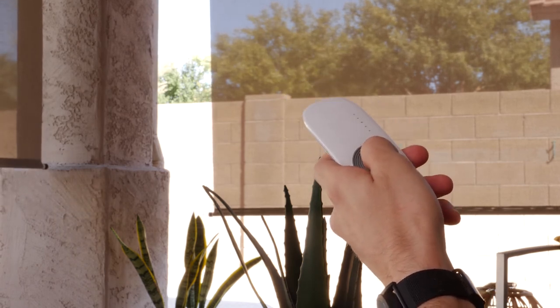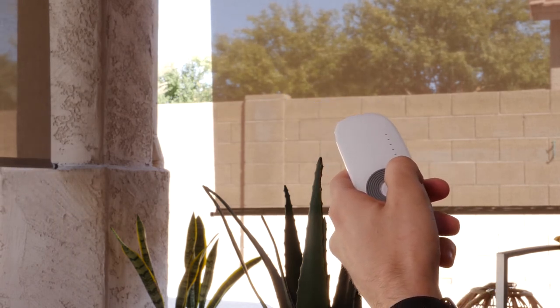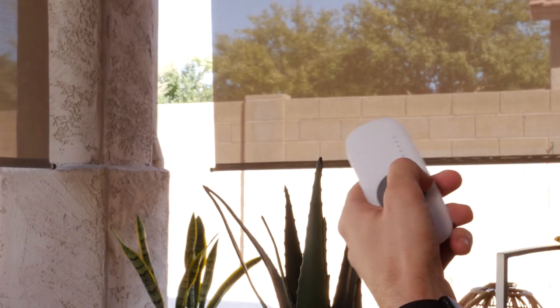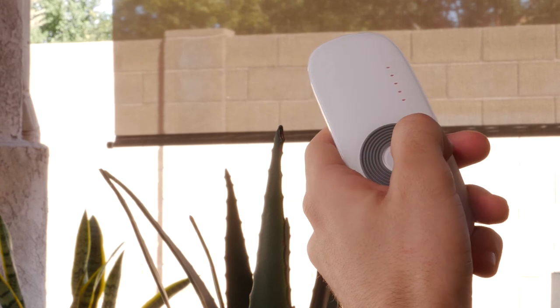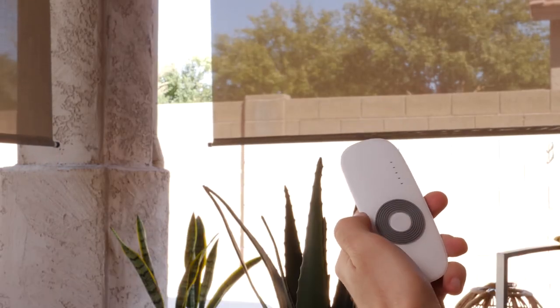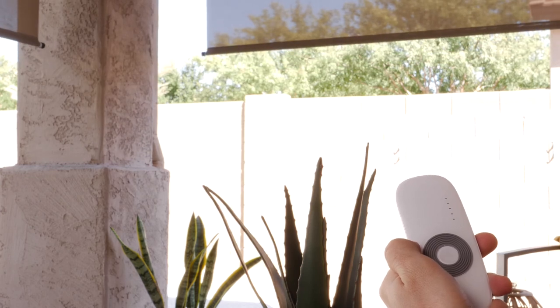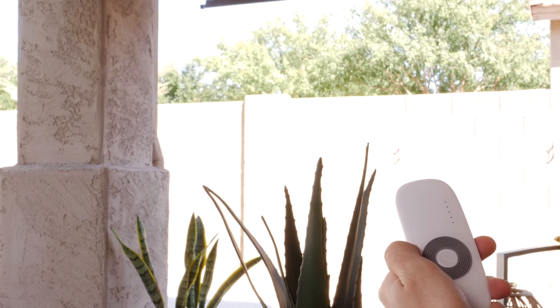You can also operate both shades simultaneously by highlighting all 5 channels on your remote. To do this, click the channel increase button until you see all 5 indicator lights illuminated. Now, use the up or down button to operate all shades that have been programmed to your primary remote.